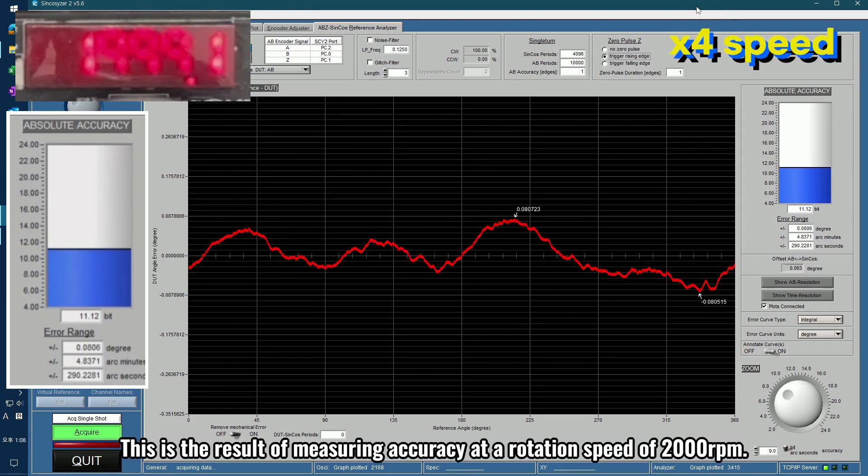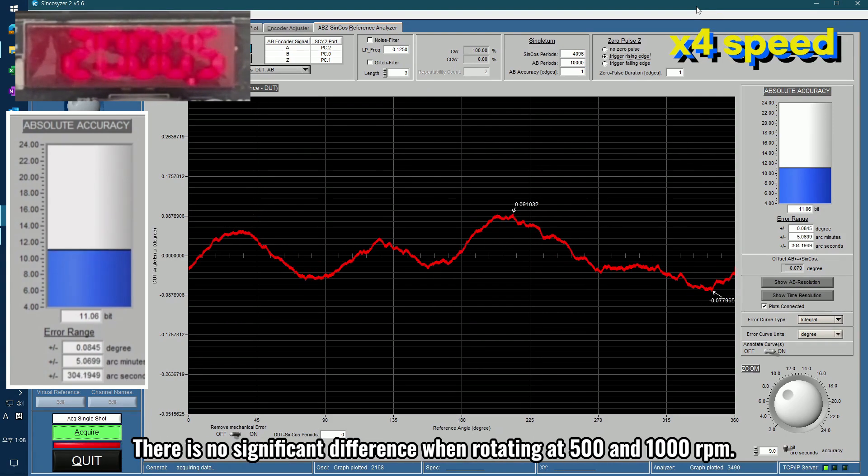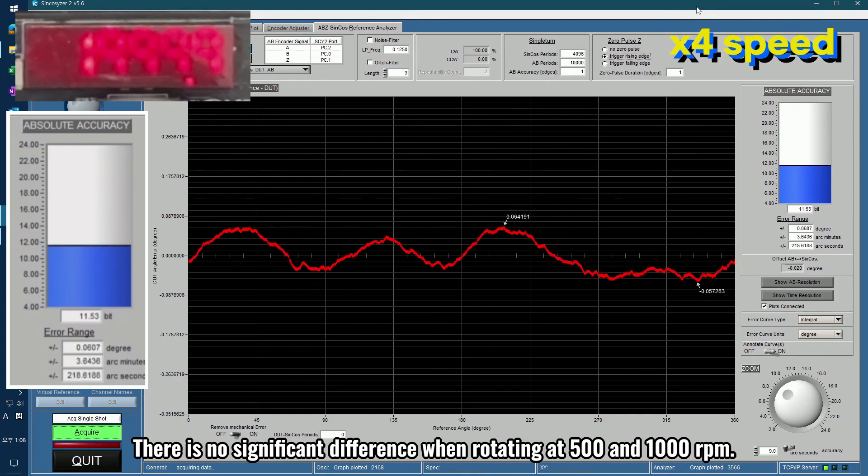This is the result of measuring accuracy at a rotation speed of 2000 revolutions per minute. There is no significant difference when rotating at 500 and 1000 revolutions per minute.